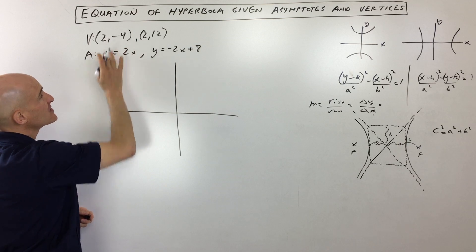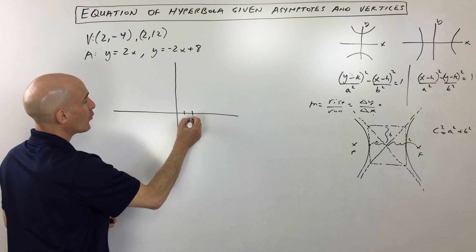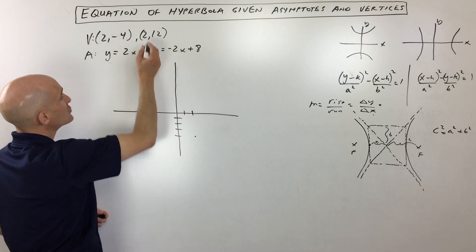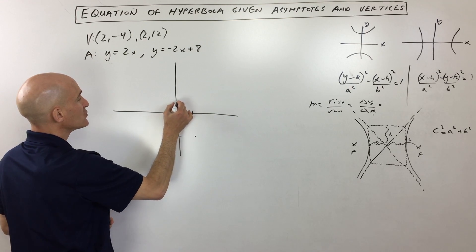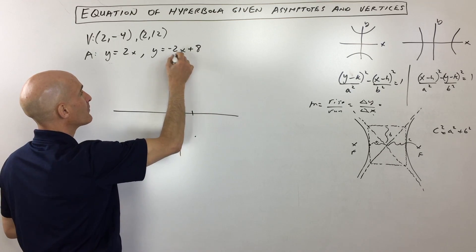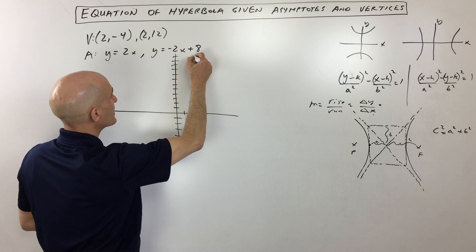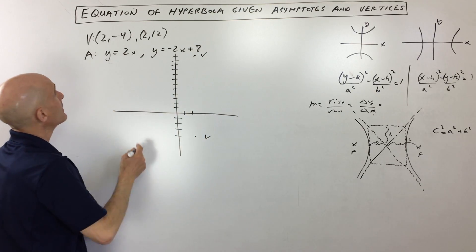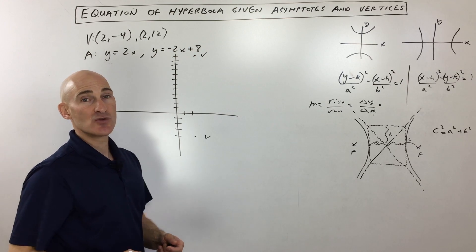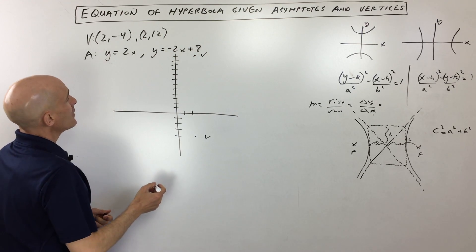And you can see that the vertices here that they give us are at (2, -4), one two three four, so (2, -4) right about there and (2, 12). So let's see, one two three four five six seven eight nine ten eleven twelve, way up here right. So that's our other vertex.